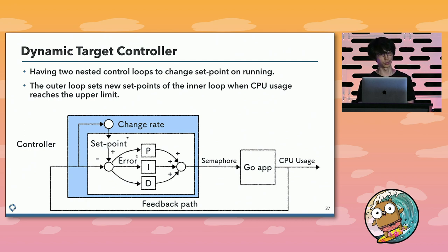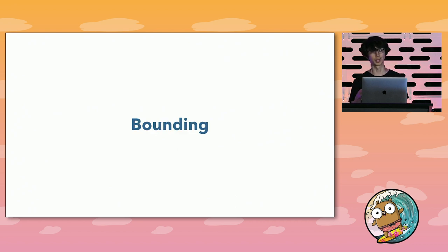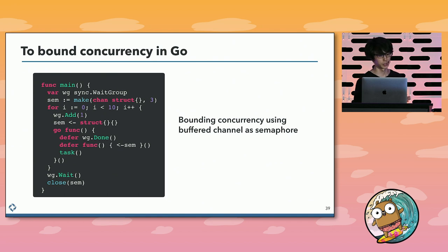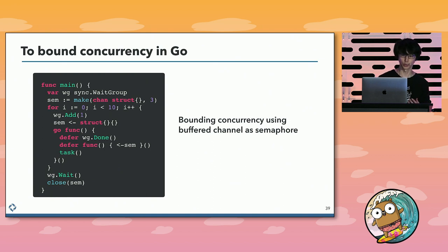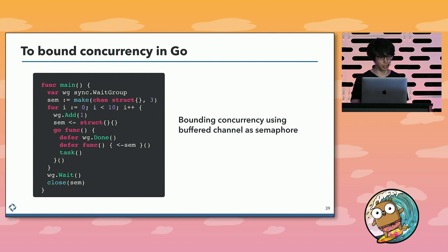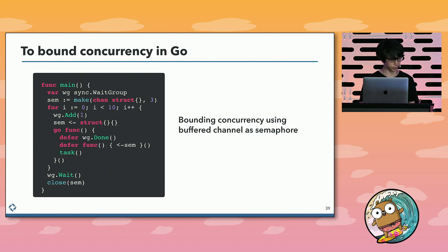That concludes this part on the dynamic target controller. Now we should be able to determine the optimal number of goroutines rapidly, continuously, and accurately. Finally, I'd like to consider how to bound concurrency with a determined number. In this subsection, I will explain about bounding concurrency dynamically. This is Go code that we often use to bound concurrency. We usually use the buffered channel as a semaphore. In this example, the buffer for the channel is 3, so only 3 goroutines run at the same time. In my proposal, the optimal number of goroutines will be different in every iteration of the feedback loop. However, we cannot change the buffer size of the channel later. Therefore, we need a dynamic semaphore for the method.